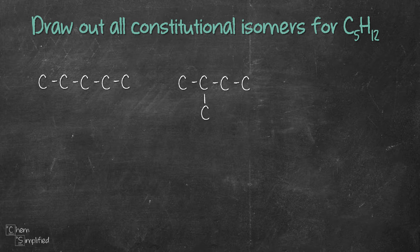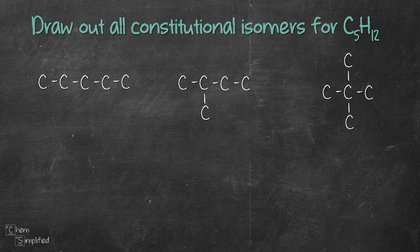Moving on to 3 carbon chain, the only way to place the two remaining carbons is to stick them on the second carbon. So we get a 3 carbon chain with 2 substituents like this.